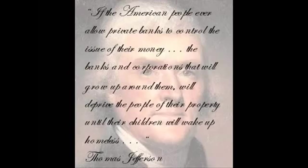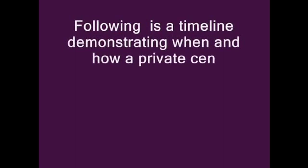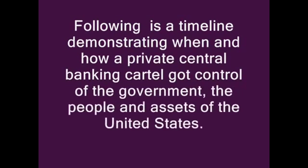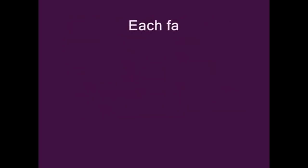If the American people ever allow private banks to control the issue of their money, the banks and corporations that will grow up around them will deprive the people of their property until their children will wake up homeless. — Thomas Jefferson. Following is a timeline demonstrating when and how a private central banking cartel got control of the government, the people, and the assets of the United States. Each fact is supported by official sources. Source documents are available at www.anticorruptionsociety.com under the tab 'source documents.'